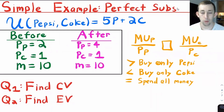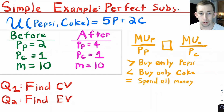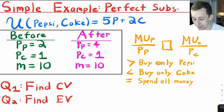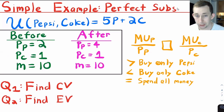Let's jump into the next example problem where instead of perfect complements, we're going to use perfect substitutes — Pepsi and Coke, two different sodas. Before the price change, the price of Pepsi is $2 and the price of Coke is $1. The price change is that Pepsi doubles to $4. Both before and after, we have $10 in our wallet. For perfect substitutes, we use the bang-for-buck equation: marginal utility of Pepsi over price of Pepsi compared to marginal utility of Coke over price of Coke. If it's greater, we only buy Pepsi; if it's less, we only buy Coke.